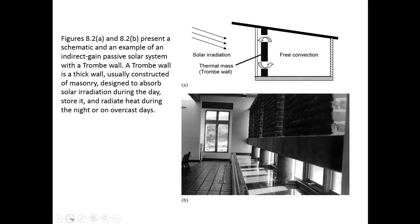Figure 8-2 presents a schematic of an indirect gain passive solar system with a Trombe wall. You have a window and a high thermal mass wall in front of it that absorbs heat during the day and dissipates it inside the house during the night. The Trombe wall is usually a thick wall constructed of masonry, designed to absorb solar radiation during the day, store it, and radiate heat at night.